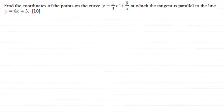Hi there. Now for this question we're asked to find the coordinates of the points on the curve y equals one-third x cubed plus 9 over x, at which the tangent is parallel to the line y equals 8x plus 3. And this is for 10 marks.